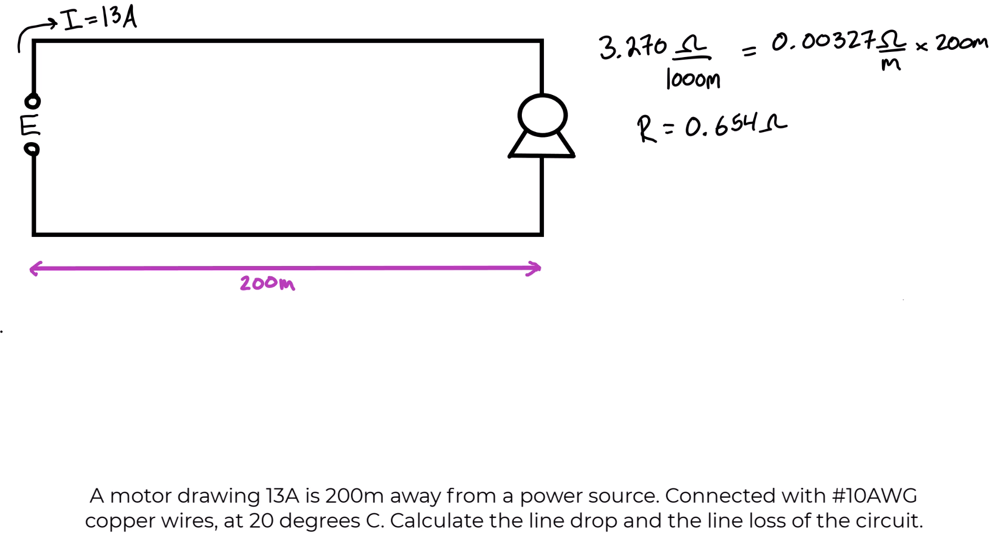Something that's kind of nice to do in problems like this is to actually draw in some resistance on the line just to remember they're not considering these conductors to be totally ideal—they actually have some resistance, and that is the point of the problem. For the 200 meters on top we have 0.654 ohms, and for the 200 meters on the bottom we have 0.654 ohms.